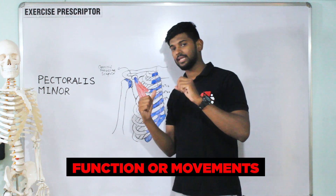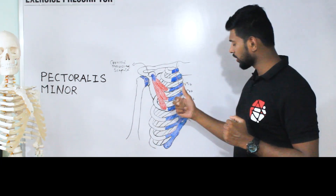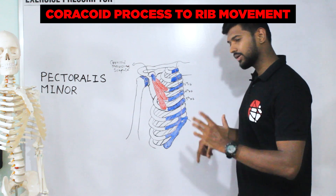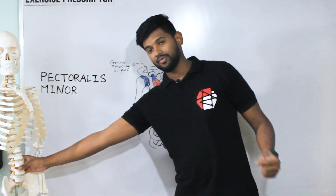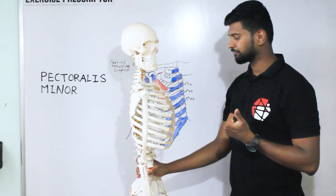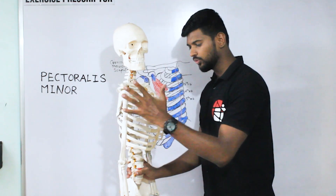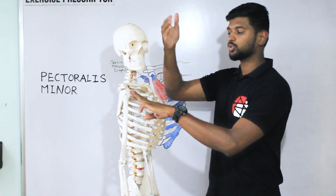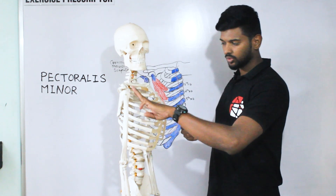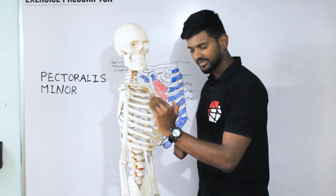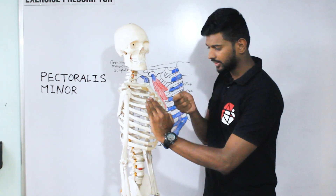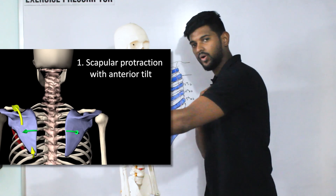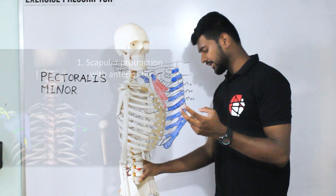Every muscle produces two-way movement, so this muscle also produces movement from the coracoid process to the rib, and from the rib to the coracoid process. First, when the rib attachments are fixed, and looking at the pectoralis minor in a lateral view, the fibers run in a somewhat horizontal oriented manner. The coracoid process moves toward the rib attachment, producing protraction of the scapula — a forward reaching movement of the arm.